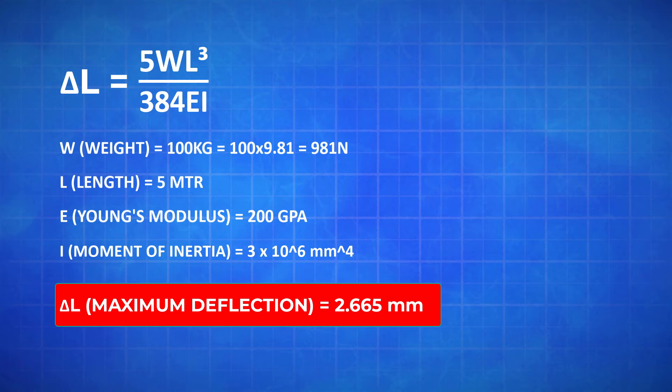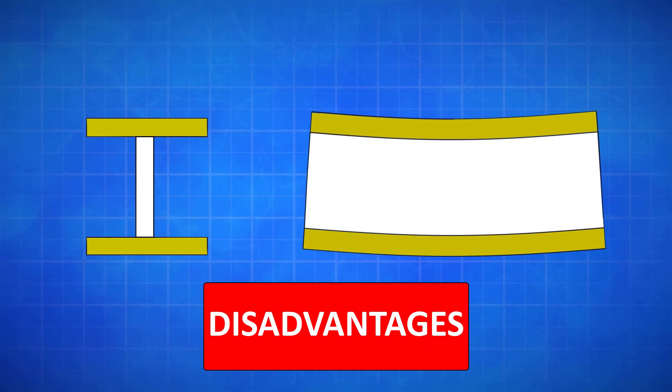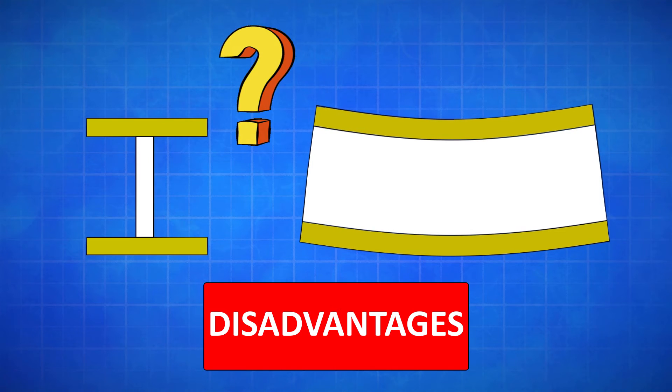However, this value may vary depending on the other factors such as temperature, nature of load and safety considerations. Up until this point, we have only discussed the advantages of using an I-Beam. But what are the disadvantages?